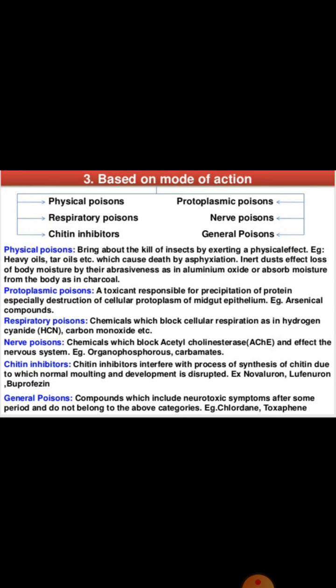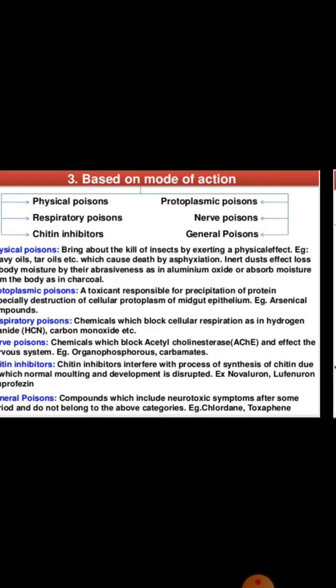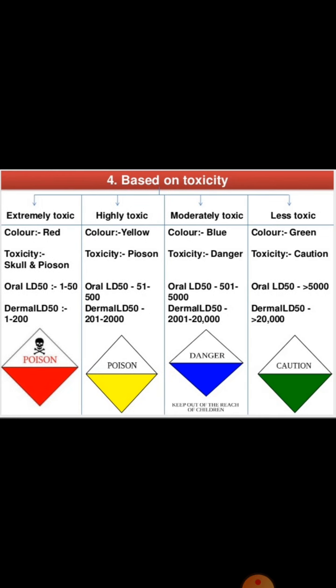General poisons are compounds which produce neurotoxic symptoms after some period and do not belong to the above categories; examples are chlordane and toxaphene. These are neurotoxic, meaning they attack the nervous system of the insect. The fourth classification is based on toxicity: some are extremely toxic, some are highly toxic, some are moderately toxic, and some are less toxic.